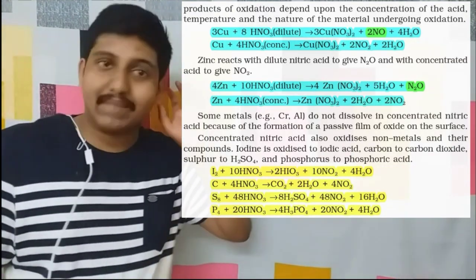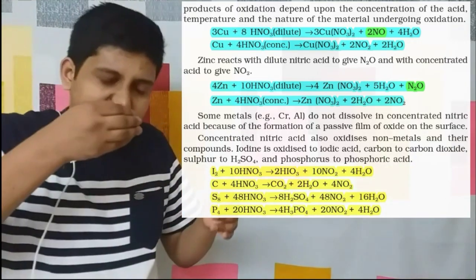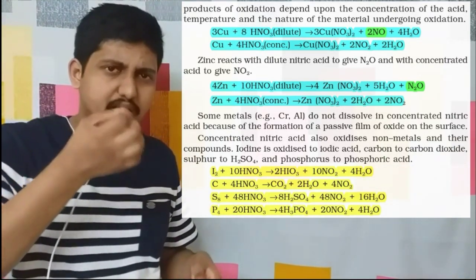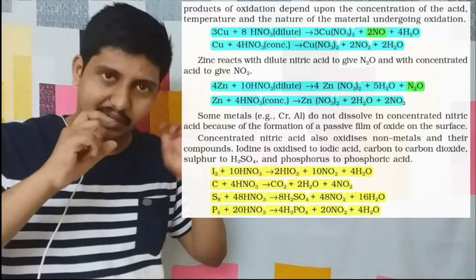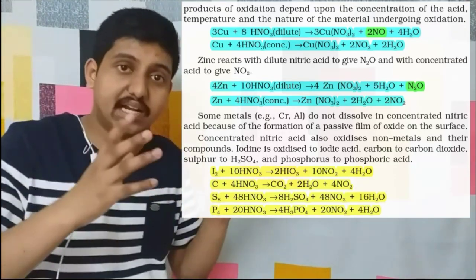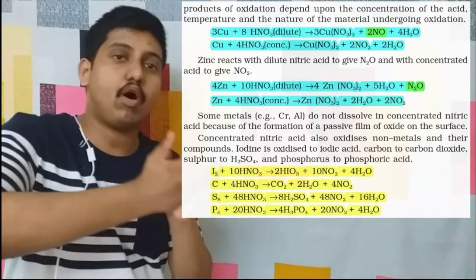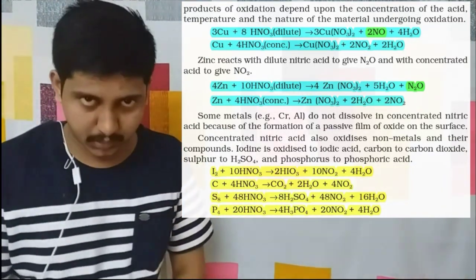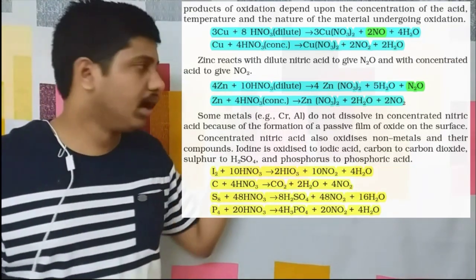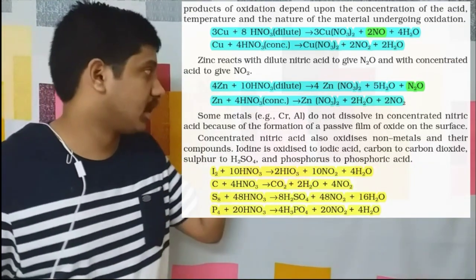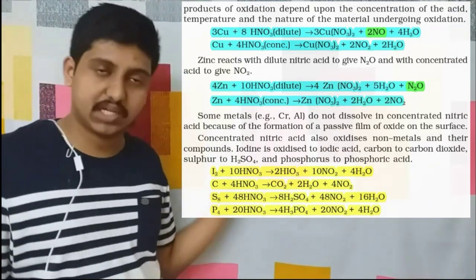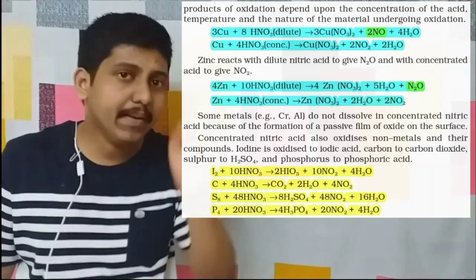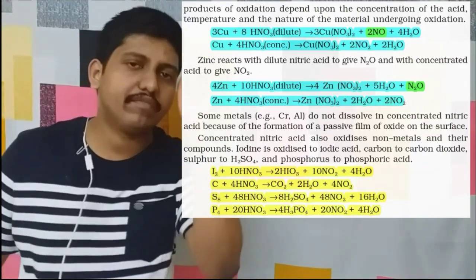If a reaction is given as chromium plus HNO3, no major products are listed because initially the reaction takes place for a short time to form an oxide layer — an oxide film — over the metal. Hence these metals become non-reactive to HNO3. This is called passivation.